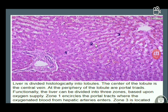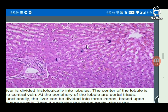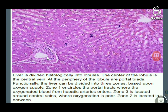Before we move on to cirrhosis, we should know how the normal histology of the liver looks. The liver is divided histologically into lobules. Each lobule has a central vein at the center, and around it is a hexagon. At the edges of the hexagon are the portal triads, each showing three structures: the hepatic artery, portal vein, and bile duct.